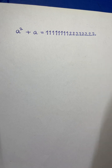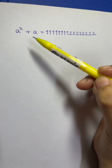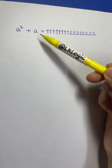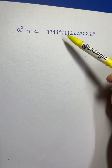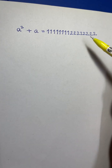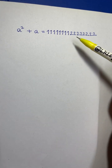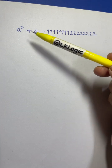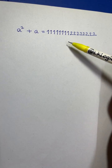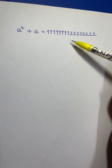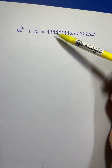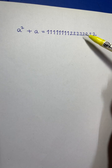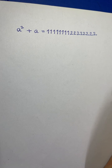Hi everyone, in this video we are going to solve this equation. What can you see in this? We have a² + a equals to 111...1222...2 — a very large number. There are eight ones and eight twos on the right-hand side. The left-hand side is a very simple term in a, but the right-hand side is a huge number.